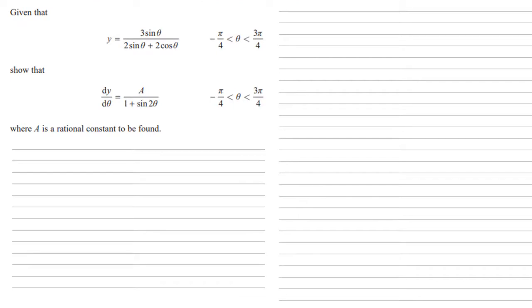Given that y equals 3 sine theta over 2 sine theta plus 2 cos theta, we want to show that dy by d theta equals a over 1 plus sine 2 theta, where a is a rational constant to be found.